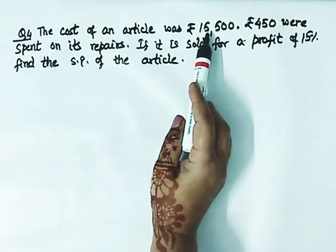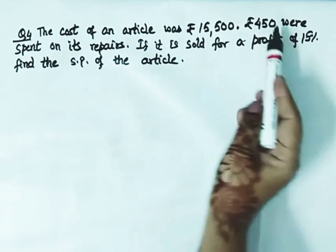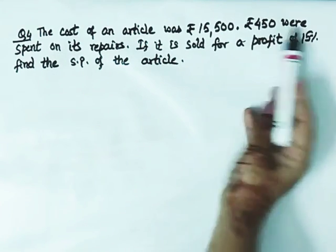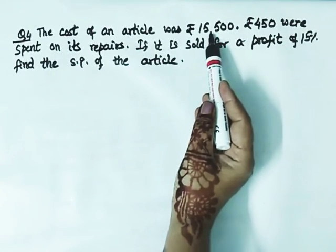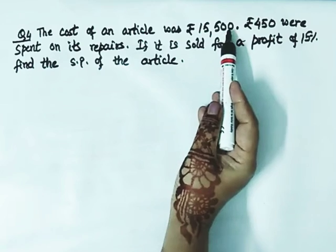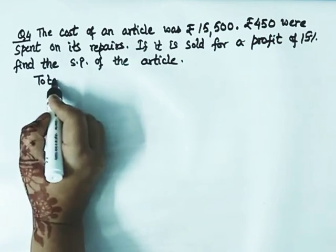The cost of an article was 15,500 rupees. This is the CP. 450 rupees was spent on its repair. So rupees 15,500 is the CP, and 450 are extra charges.